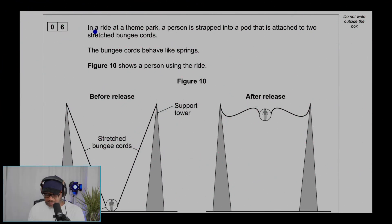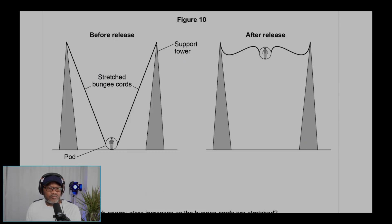Question six: In a ride at a theme park, a person is strapped into a pod that is attached to two stretched bungee cords. The bungee cords behave like springs. Figure 10 shows a person using the ride.